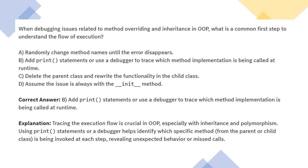The last question for this video relates to debugging style: when debugging an issue related to method overriding and inheritance in object-oriented programming, what is a common first step to understand the flow of execution? Out of the four options, you have to choose the optimal one, which is adding print statements and checking whether everything is flowing as per the expected execution. You can use print statements wherever you want to check the output of a particular step. This is a difficult example that helps illustrate what sort of questions CBIT can ask.